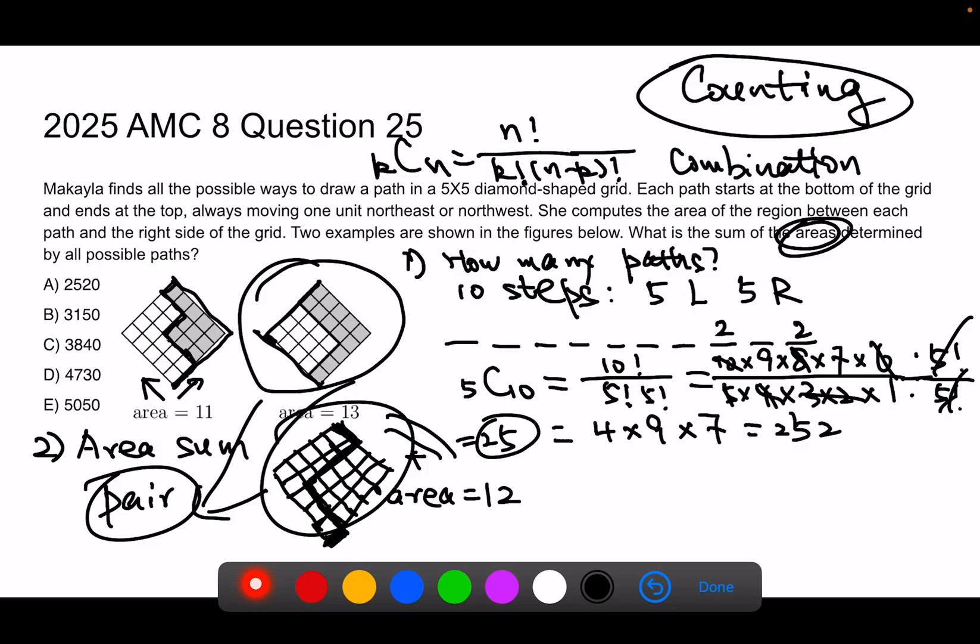So how do you find the total area? Well, I have 252 over two pairs, because each two of them is a pair. And for each pair, my total area is 25. And now if you do this calculation, you can find the final answer is 3,150. The answer is big.